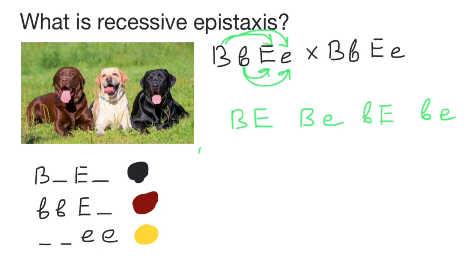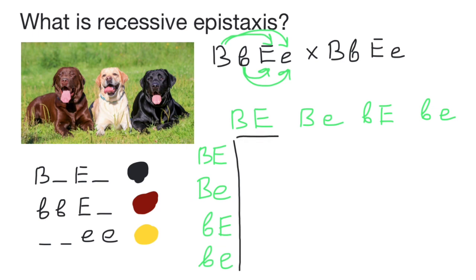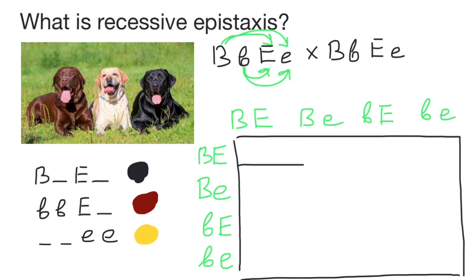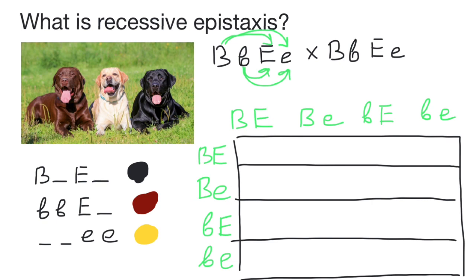Let's build a simple Punnett square. We are going to have a square with four rows and four columns, listing all the possible diploid genotypes of the progeny from parent one and parent two.